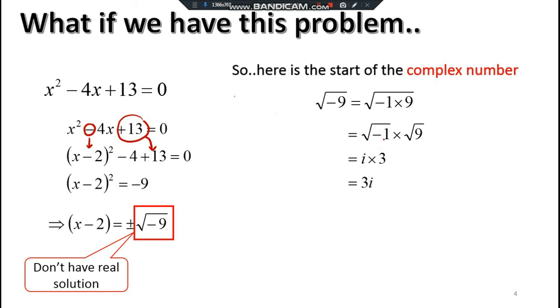So our answer from here should be (x - 2) = ±3i. Our final answer, by bringing negative 2 to the right, should be x = 2 ± 3i. This is what we call a complex number.